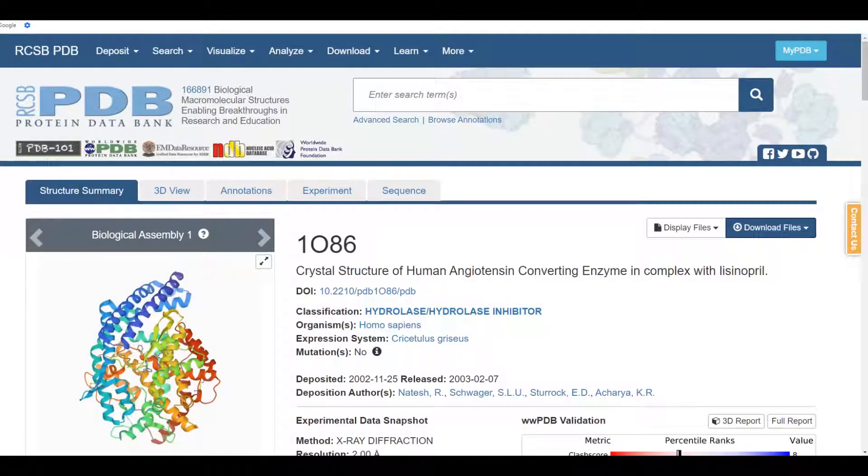We're looking at the webpage for PDB entry 1O86, and that O is a letter O, not a zero. This protein is angiotensin-converting enzyme, or ACE.